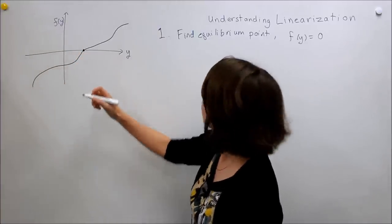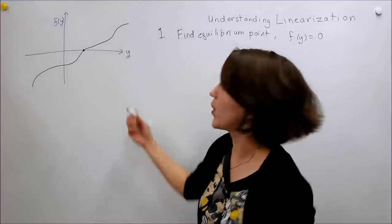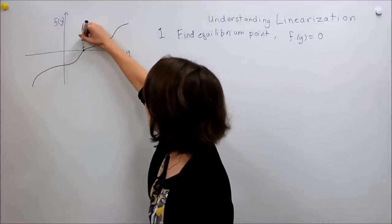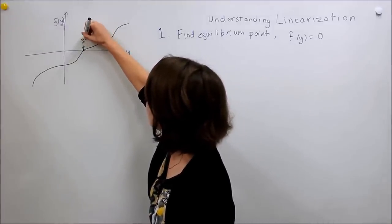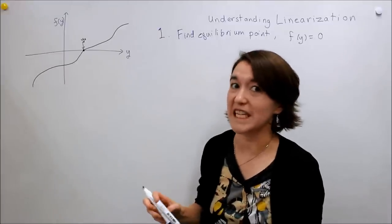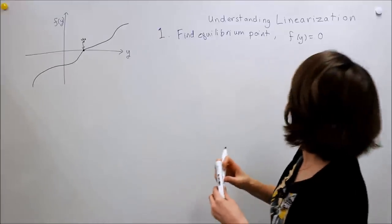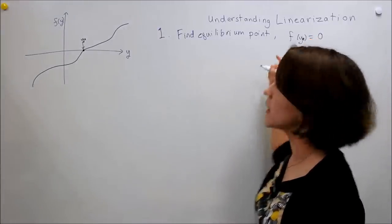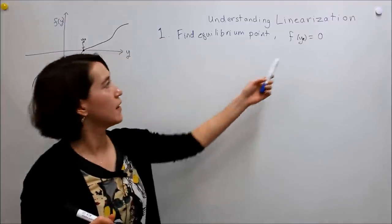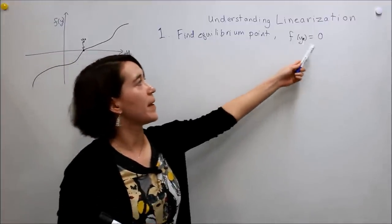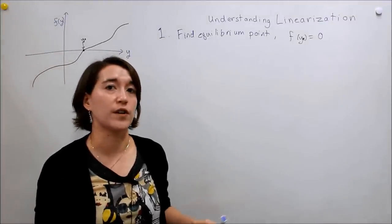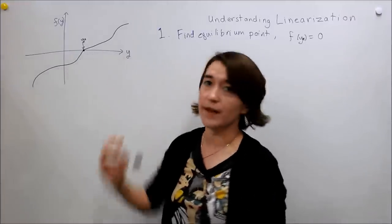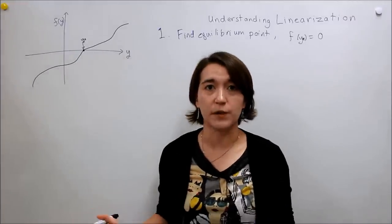We'll generally call that point y with subscript e — y_e — the input that makes the total function zero. So we found that point; that's the first thing we need to do.